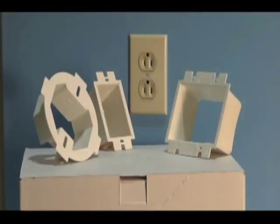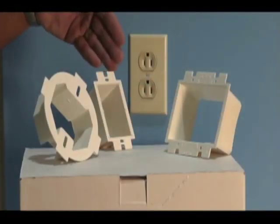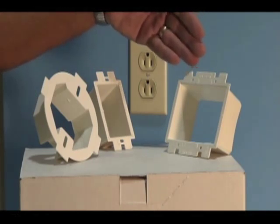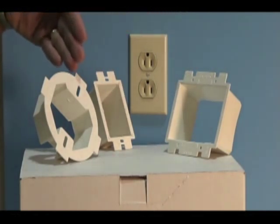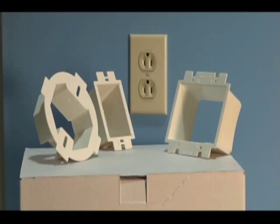Choose the box extender that's right for you. The single gang BE-1, the two gang BE-2, or the BE-1R for round or octagonal ceiling boxes.